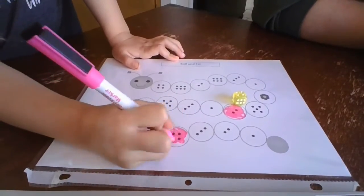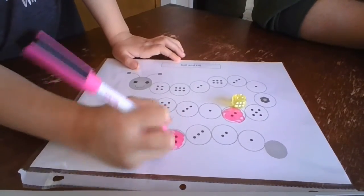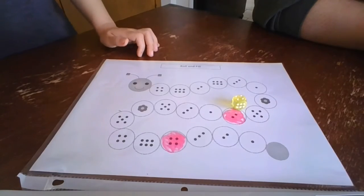So just remember, you can also explore this activity by having your child write the numeral four next to it.